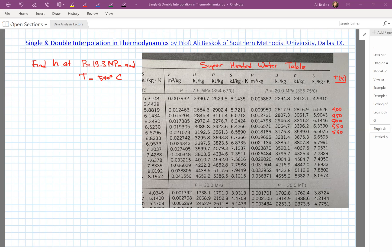The purpose of this small video is to give you an example problem and tell you about the logic behind single and double interpolation. I've replicated here a superheated water table with pressure, temperature values, and all thermodynamic variables. Our challenge is to find the enthalpy at 19.3 megapascals and 540 degrees Celsius.